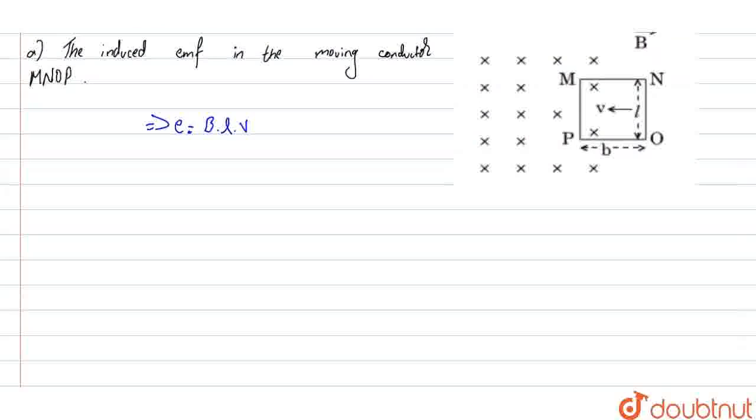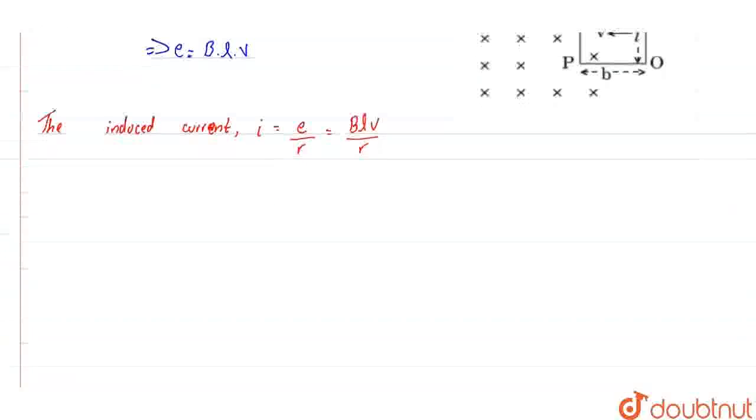Next, the induced current, denoted by i, is given by i equals E by R. Substituting our value for EMF, we get i equals BLV by R, where R is the resistance.